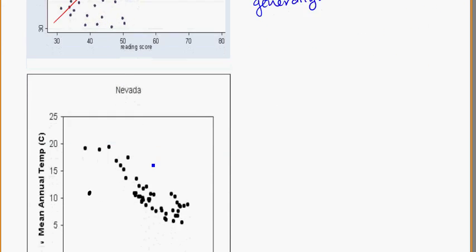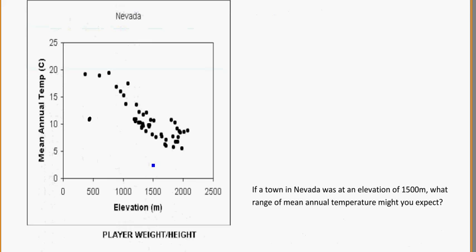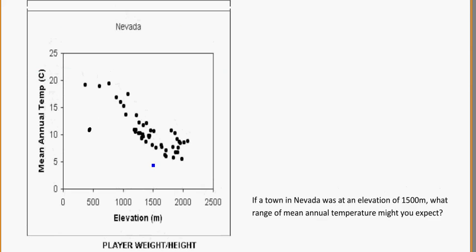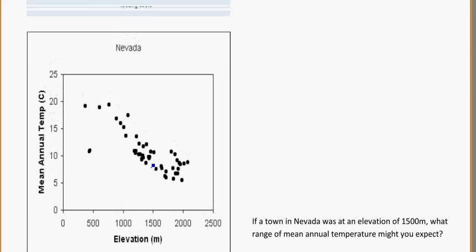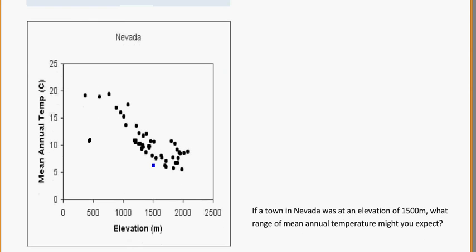And for our next one, we're looking at Nevada. This is talking about the elevation — so that's how high up — a high elevation would be the top of Mount Hutt, low elevation is Christchurch. And your mean annual temperature is kind of how warm it is on average throughout the year.